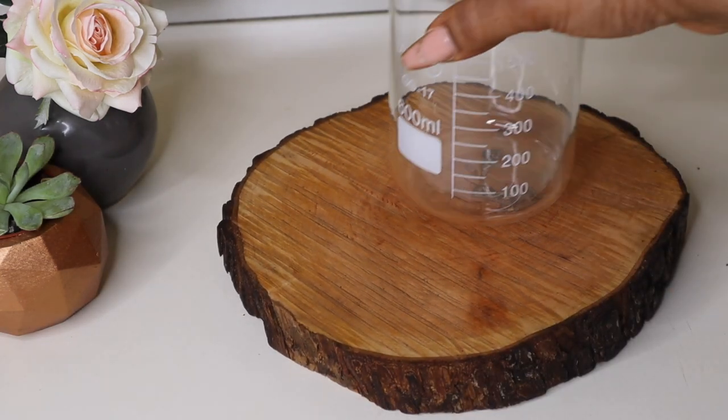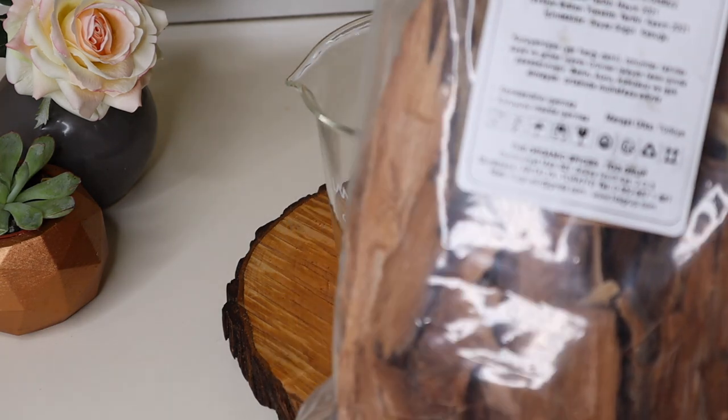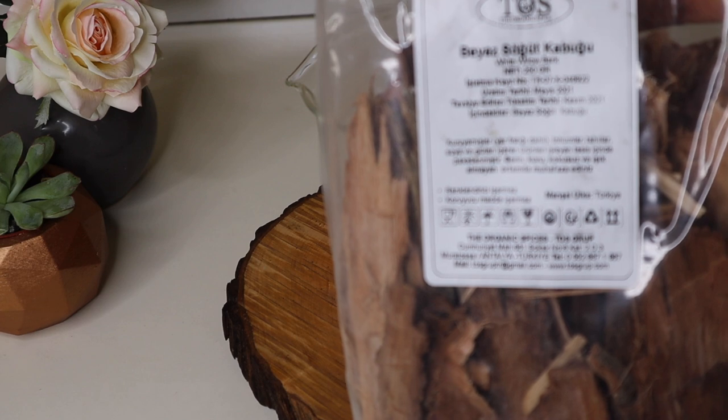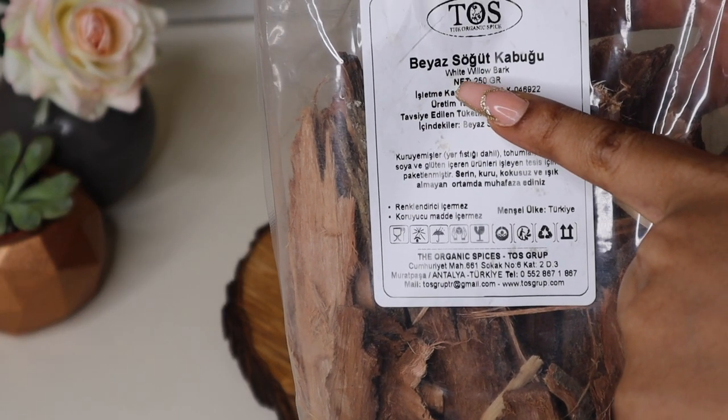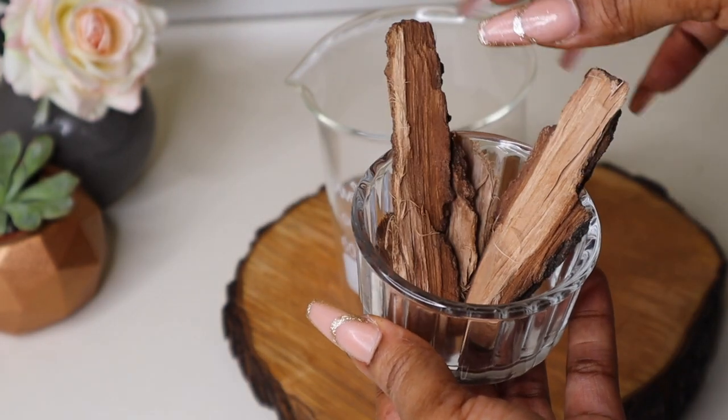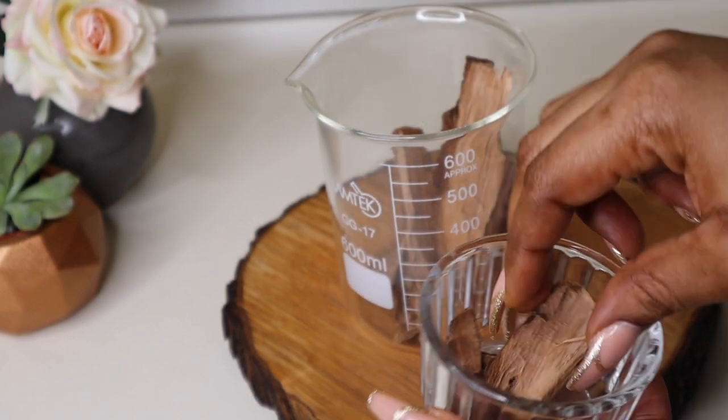First I'm going to take what I'm mixing my ingredients in. Then I'm going to add my white willow bark. White willow bark has a lot of benefits for the skin, including providing gentle exfoliation and helping to reduce acne and excess oil, just to mention a few. I'm going to add that to my cup.